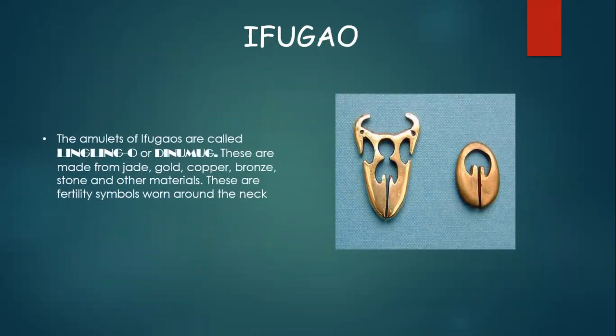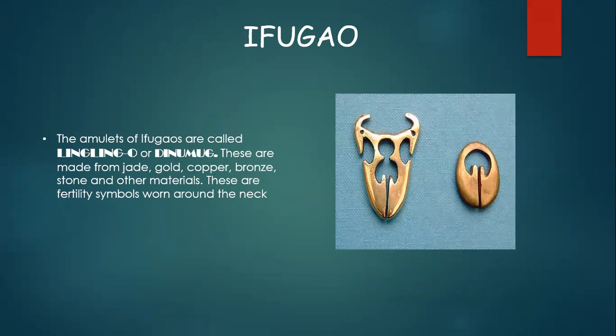In Ifugao, the ornamental piece that we can find is called Ling-Ling-O or Dinumog. These are made from jade, gold, copper, bronze, stone, and other materials. These are fertility symbols worn around the neck. It is a common ancient artifact symbolizing fertility, prosperity, and love found in the Ifugao, Bontoc, and other Cordillera regions of northern Philippines. It has a negative-space form that represents the internal female reproductive system — the womb and the birth canal — capturing the feminine essence that nourishes and gives birth to life.